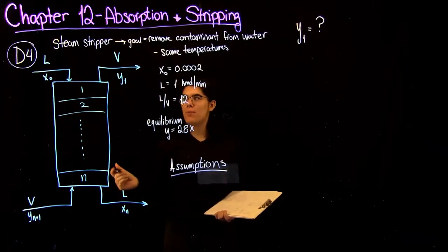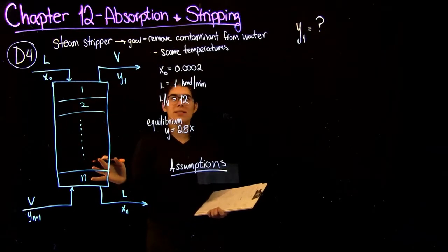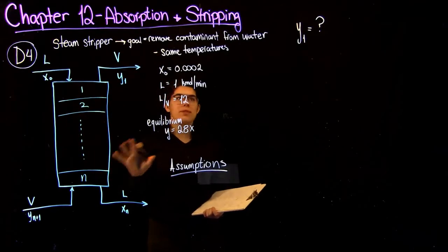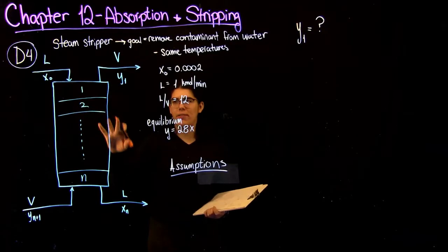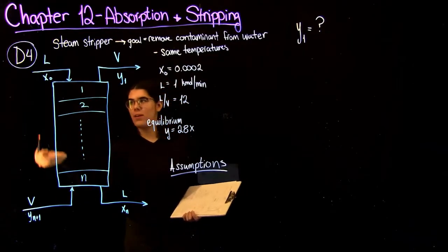So in this problem, we're given that we have a steam stripper. So what that means is the goal of the system is we want to remove some contaminant from the water or the liquid coming in. And I've drawn this diagram for you, so just so you have a little overview of what's going on.